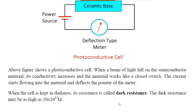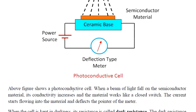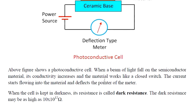There is a dark resistance in the photoconductive cell. The light and dark resistance values can be in the range of kilohms and megaohms. These are the photoconductive cells.